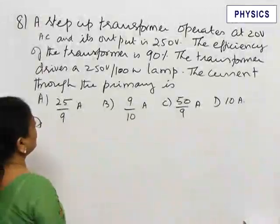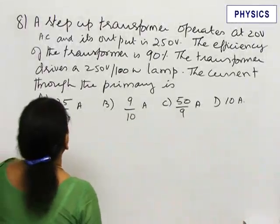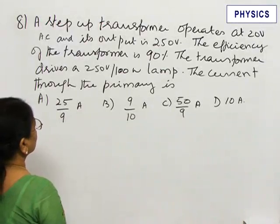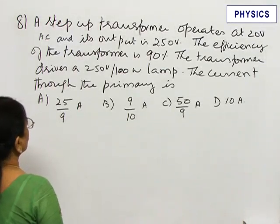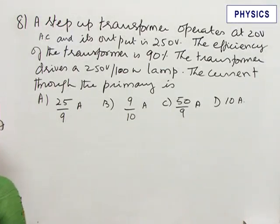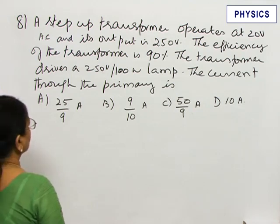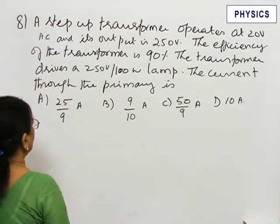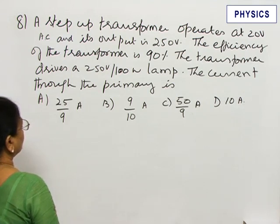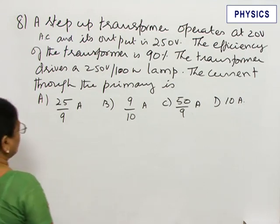Problem 8. A step-up transformer operates at 20 volt AC and its output is 250 volt. The efficiency of the transformer is 90 percent. The transformer drives a 250 volt, 100 watt lamp. The current through the primary is?